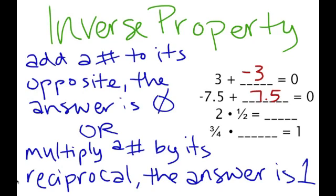With multiplication, we don't add to the opposite — instead, we multiply by the reciprocal. So 2, written as a fraction, is 2 over 1. Its reciprocal is when you flip that fraction, so multiplying by 1 over 2 gives you 2 over 2, which simplifies to 1. With 3 fourths, if we multiply by its reciprocal — flipping the fraction to 4 over 3 — we get 12 over 12, which is 1. So the inverse property of multiplication means multiplying by the reciprocal to get 1.